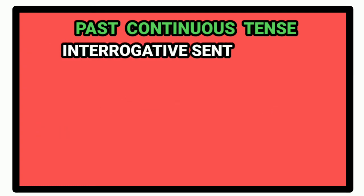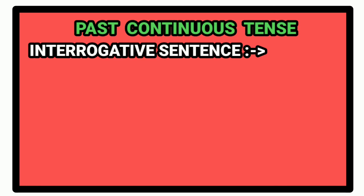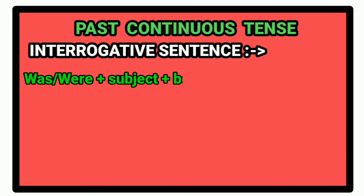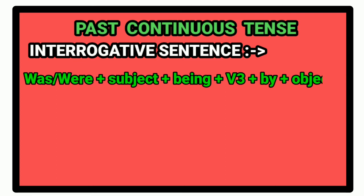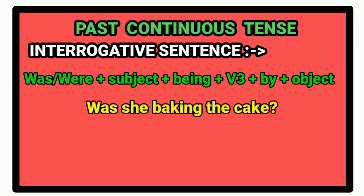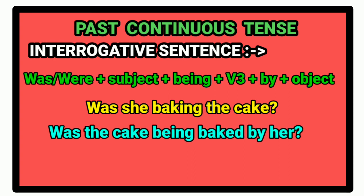For interrogative sentence in past continuous tense, we use the following rule. First of all, we write was or were. And then we write the subject of the sentence. Followed by being. After that, we write past participle form of the verb. And then we write the preposition by. And then the object. After that, the question mark. For example, was she baking the cake? The passive voice of this sentence is: was the cake being baked by her?